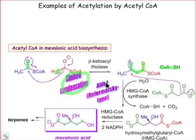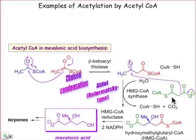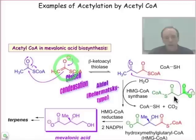The second reaction involves the Aldol reaction — specifically, a special type known as the Reformatsky reaction. The enolate is generated by a thioester that is also derived from coenzyme A. Decarboxylation — and you should show the curved arrows — would generate an enolate much like the enolate you see here. So go ahead and think about that enolate.